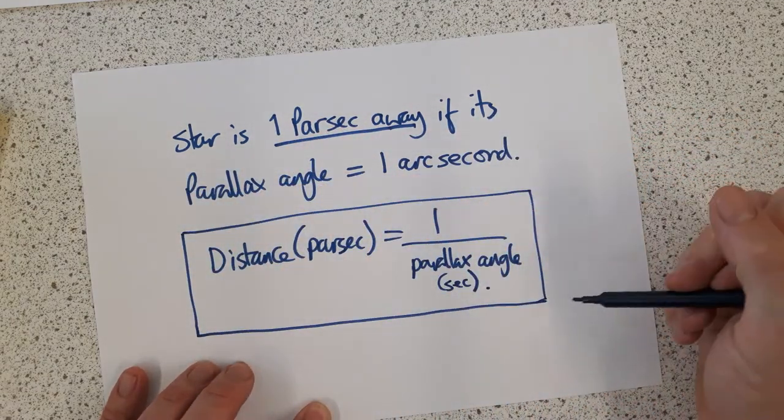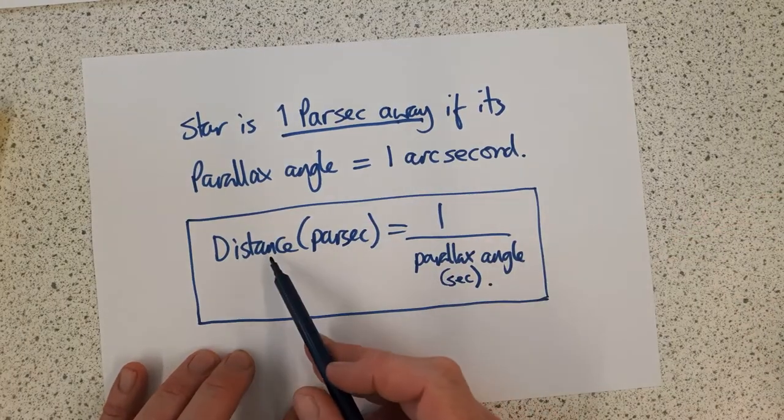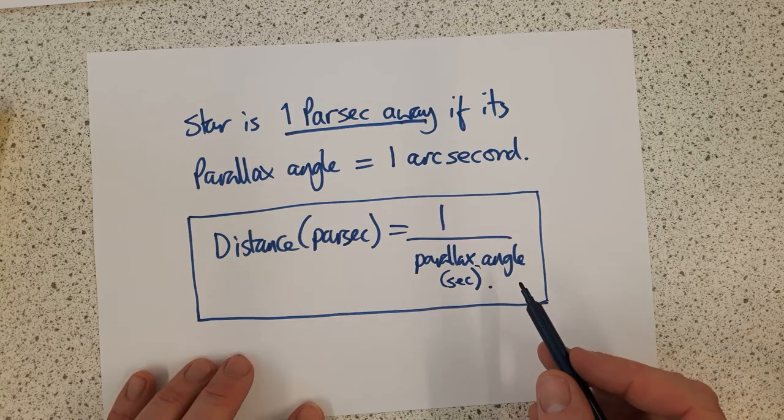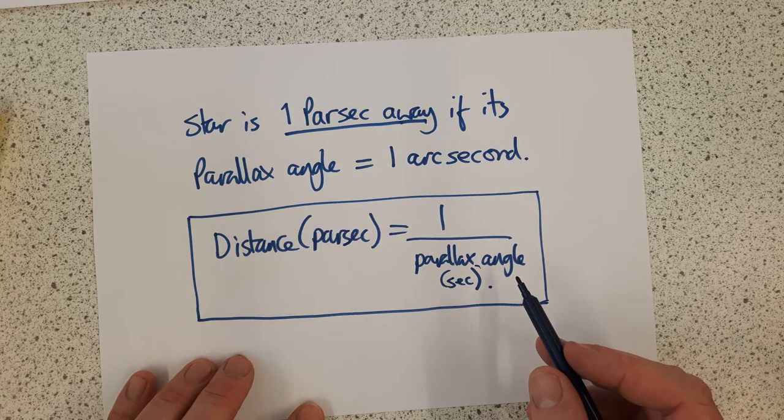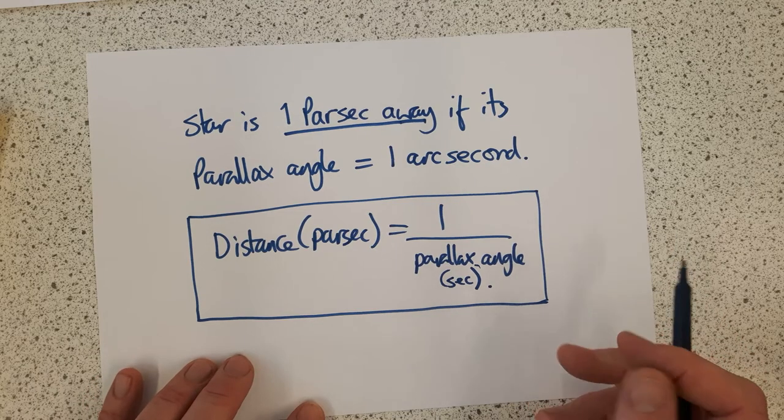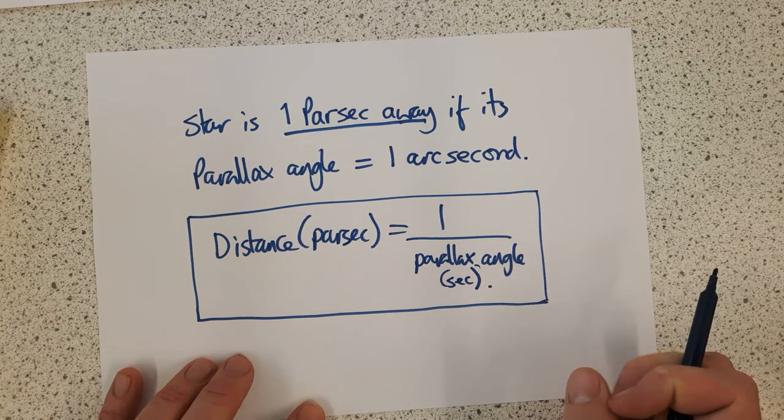Often you're asked to calculate the distance away if you know its parallax angle, and vice versa. One parsec is about the same as one light year, approximately.